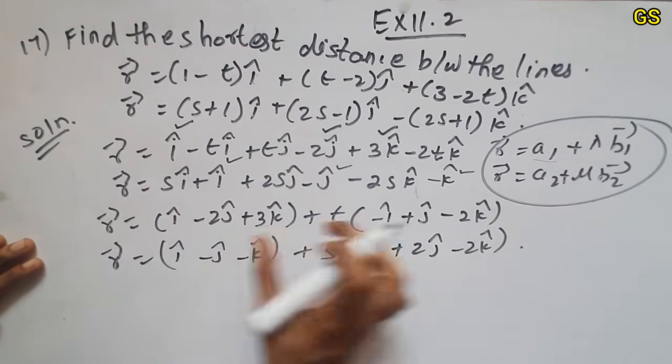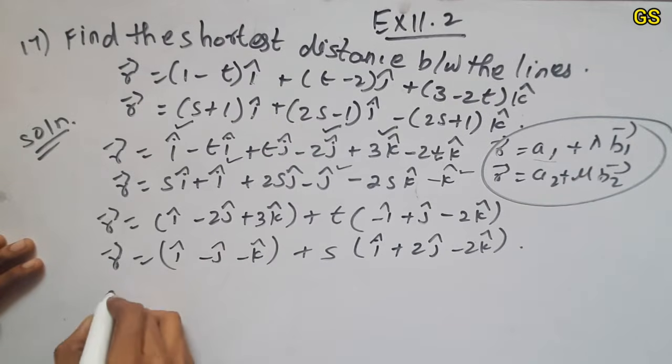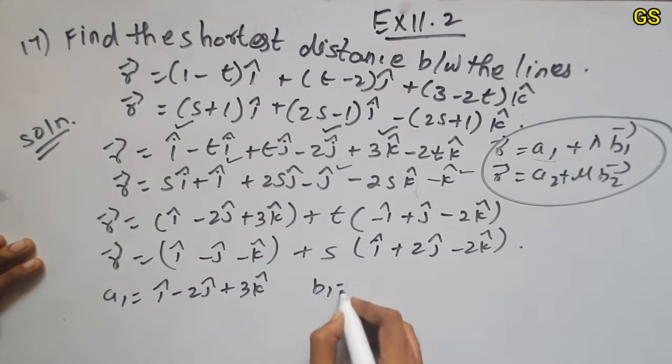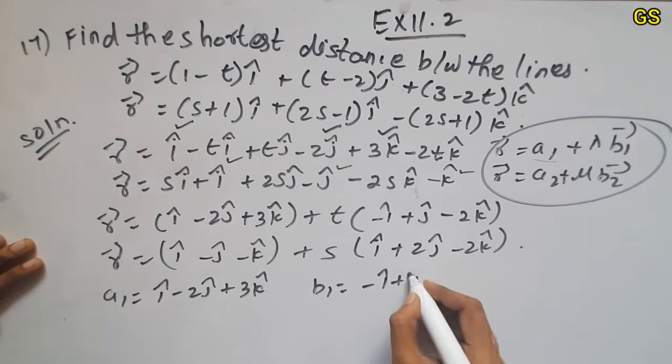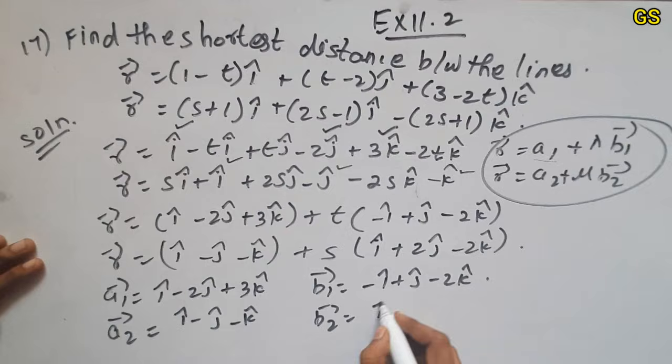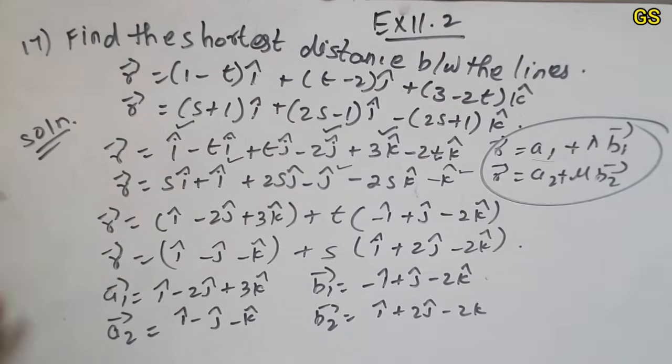So I will add r vector equal to a1 plus lambda b1, a2 plus lambda b2. So a1 is first one: i minus 2j plus 3k. Next, b1 is minus i plus j minus 2k. Next, a2 is i minus j minus k. b2 vector is minus 2k. So b1, b2 is different, so this is skew line.